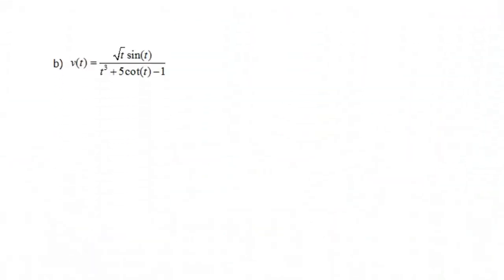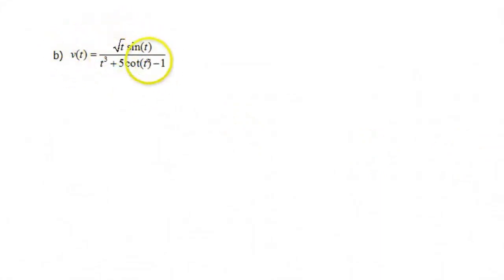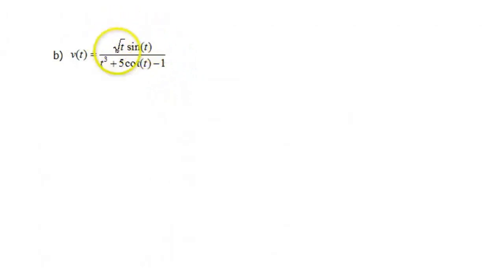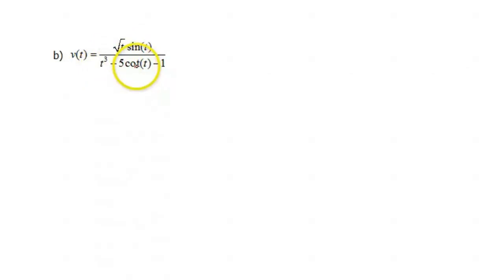Okay, the next one looks a little uglier. We have v of t equals the square root of t times sine of t, all over t cubed plus 5 cotangent of t minus 1. Overall I see a fraction, so that means we're going to need the quotient rule. And within that, I also see a product in the numerator — the square root of t times the sine of t. In the denominator, 5 is a constant so it just comes along for the ride.